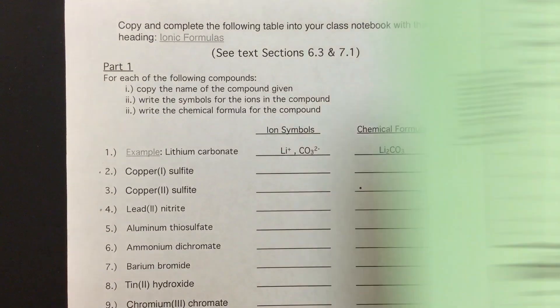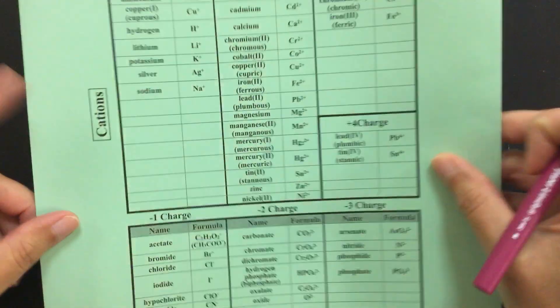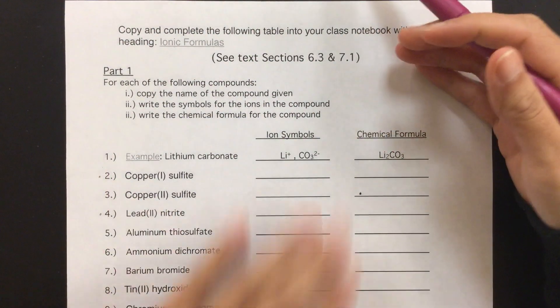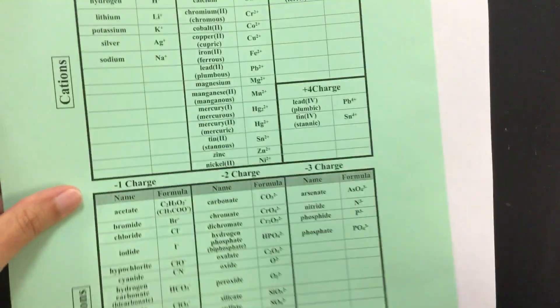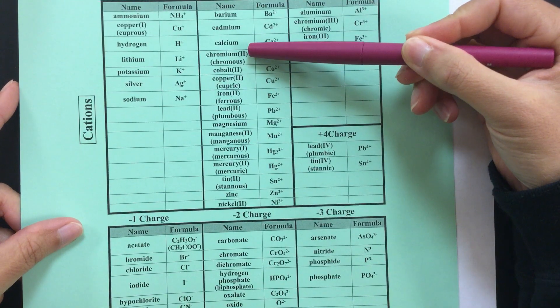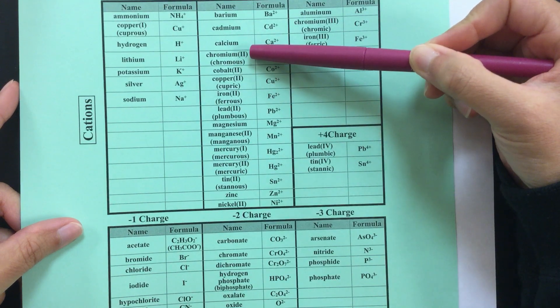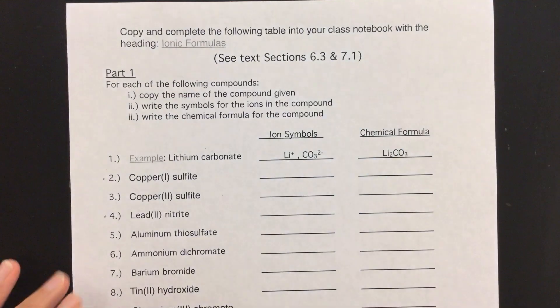One thing you'll want to have with you to do this assignment is your common ions list, which is located on the back side of your periodic table. This is where we're going to get all of our answers for the names. One note about this assignment is we are only going to use the stock naming system, which is the ion names with the Roman numerals. So with all the ion names that have two separate names, please only use the name with the Roman numerals.